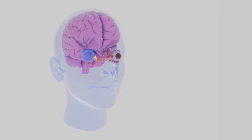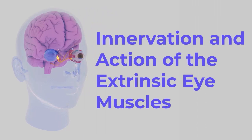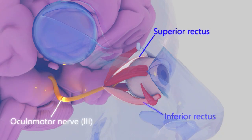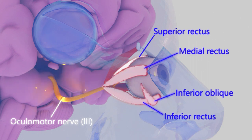The extrinsic muscles of the eye regulate eye movement. Innervation to these muscles occurs via three different cranial nerves. The oculomotor nerve innervates the superior and inferior rectus, the medial rectus, and the inferior oblique.